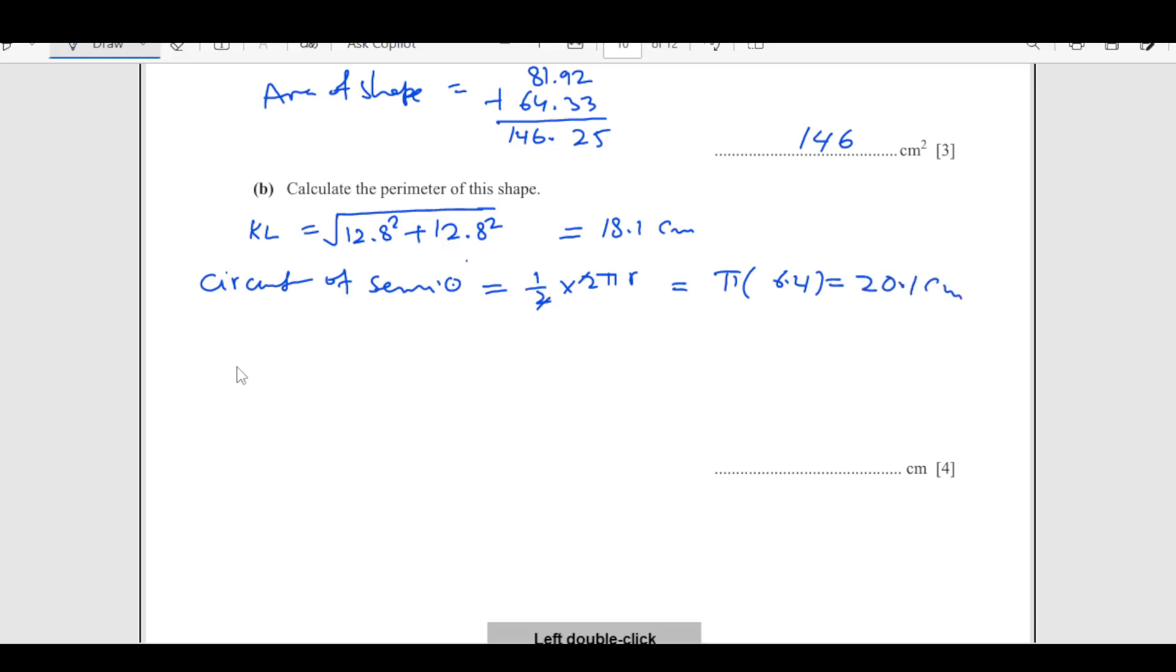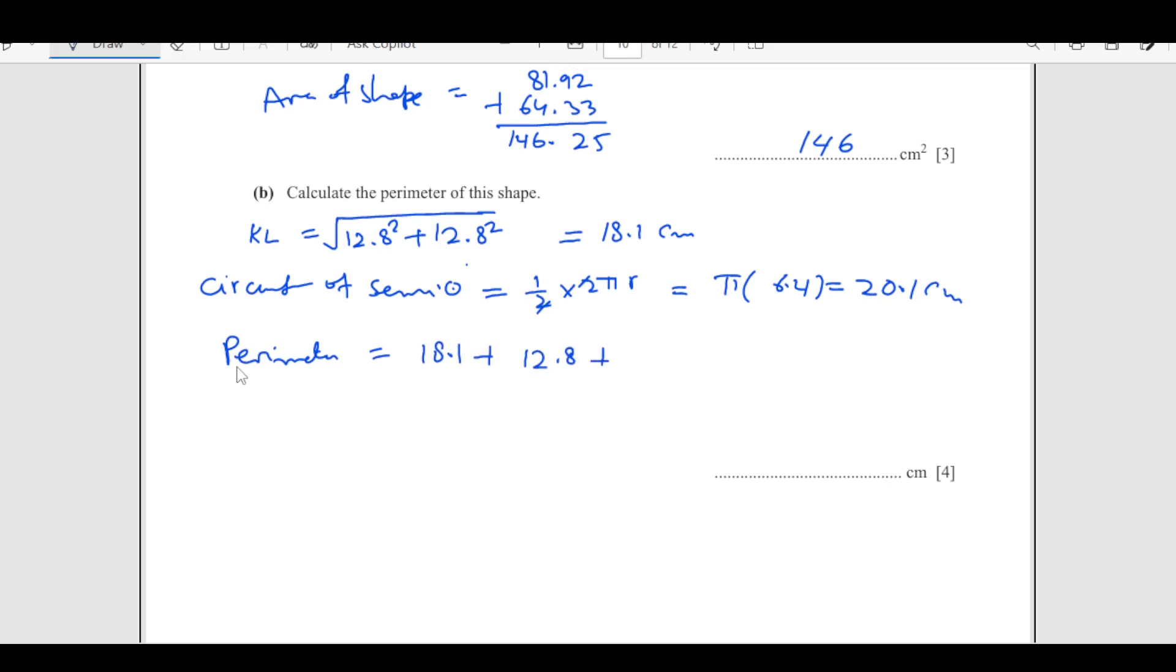Now we are going to have the perimeter. Total perimeter of the shape is going to be 18.1 plus 12.8 plus 20.1. Add all of these, then we got here 51.0. So 51.0 is the final answer.